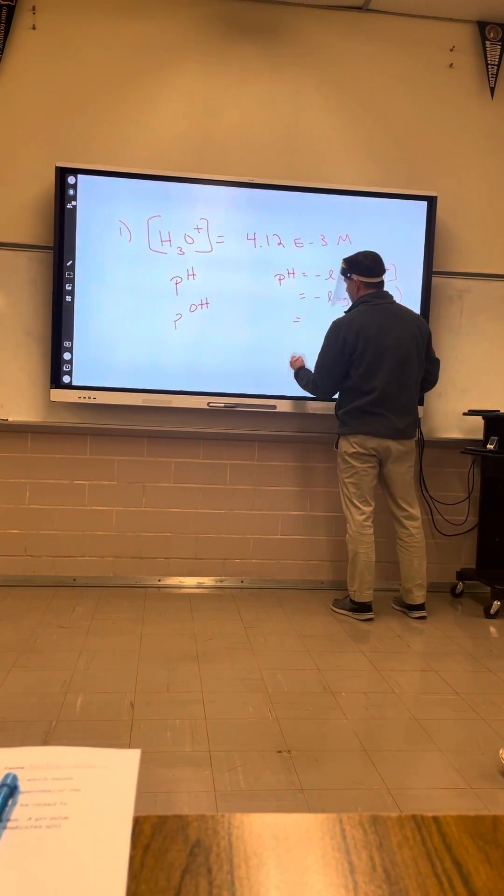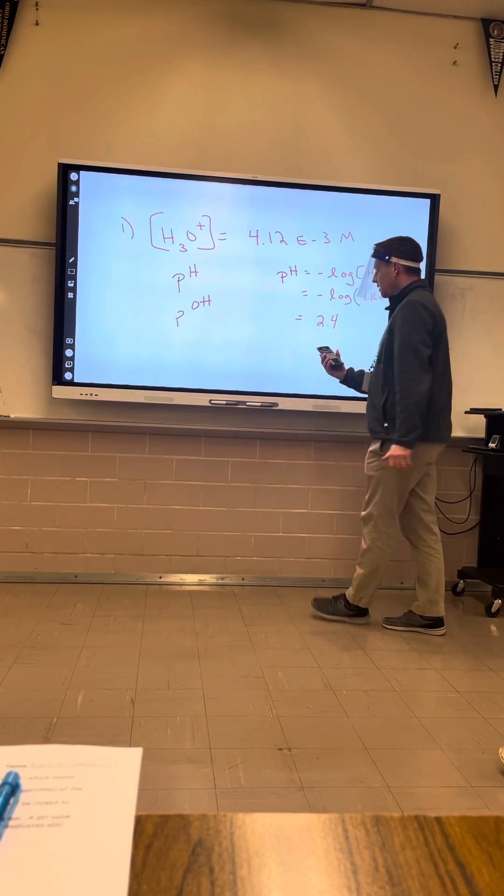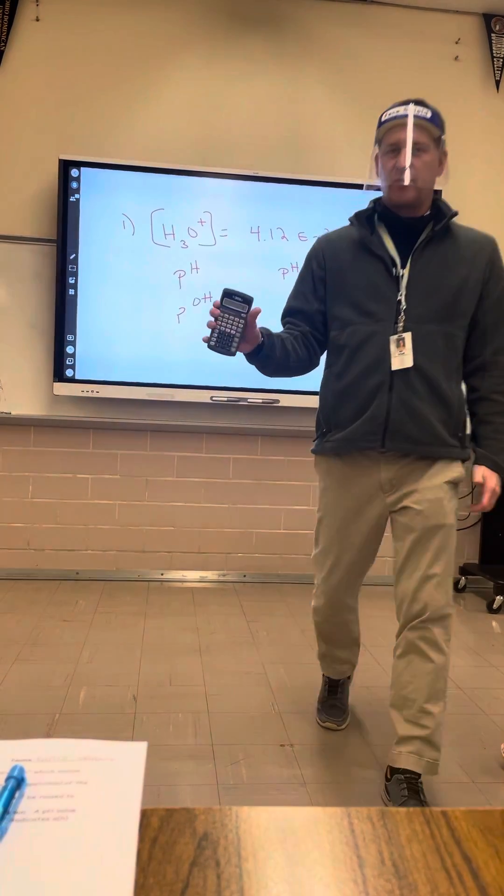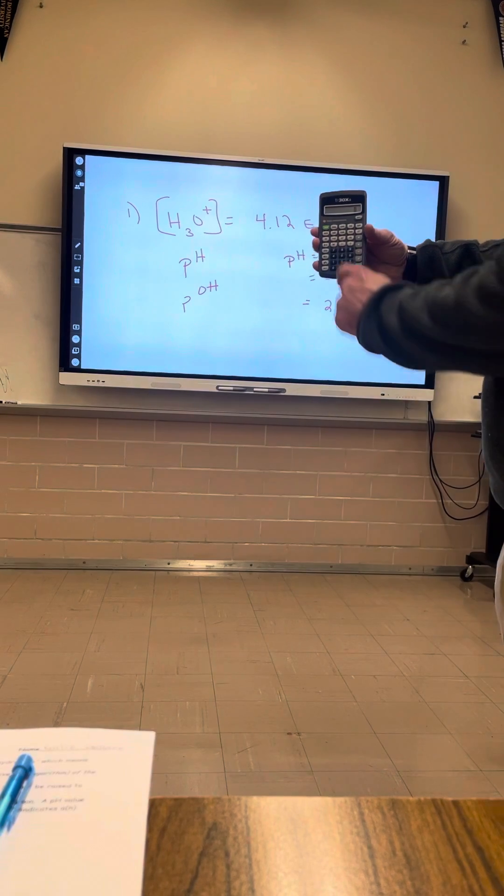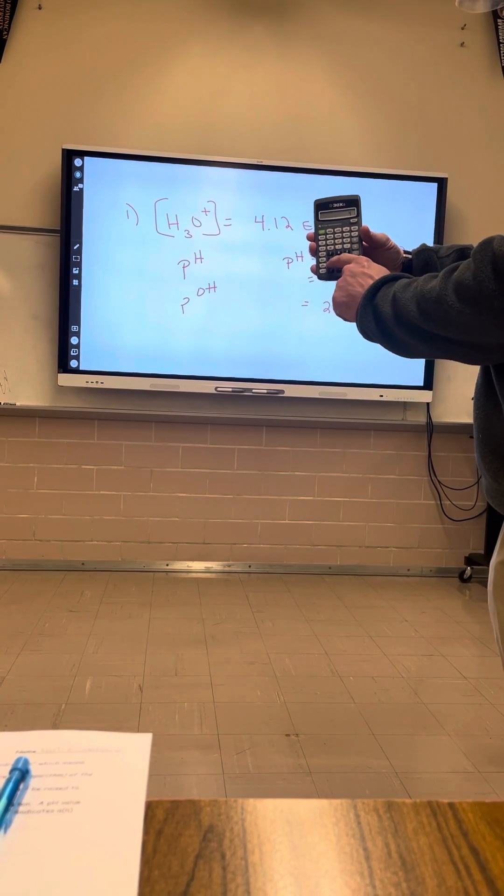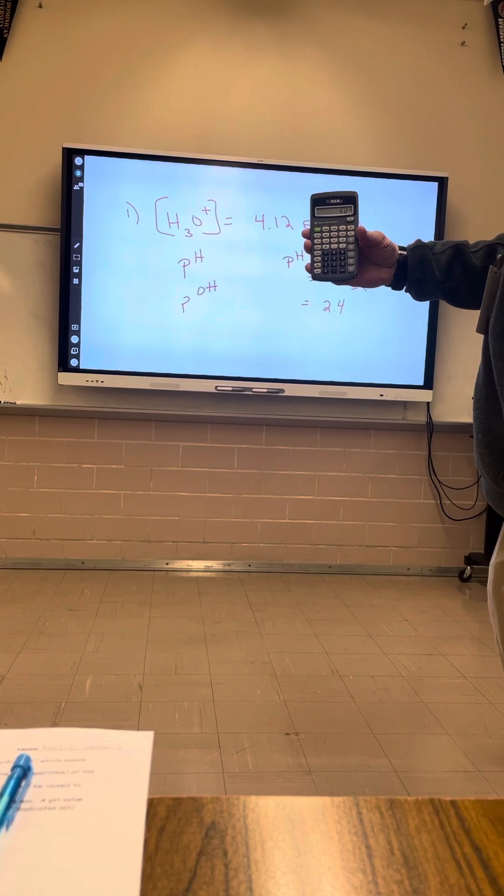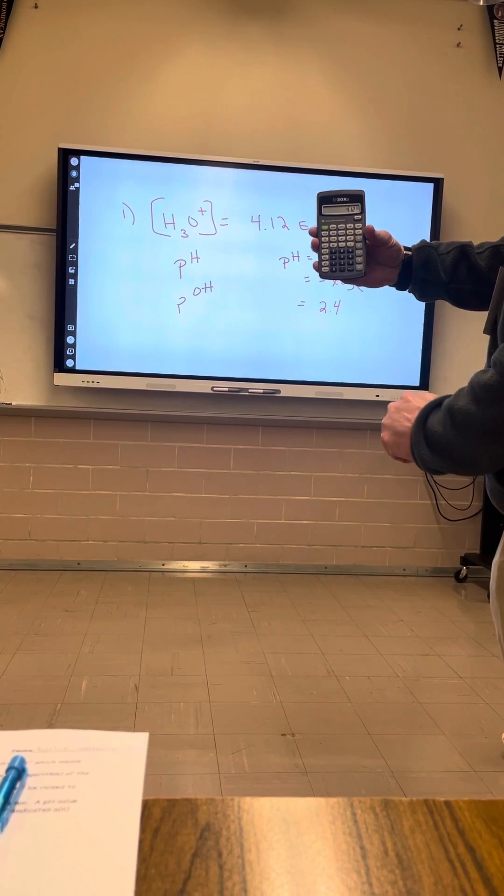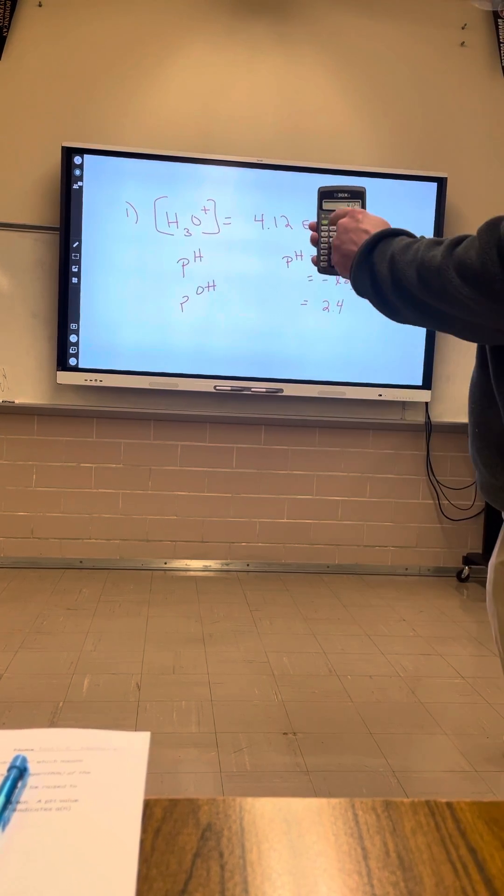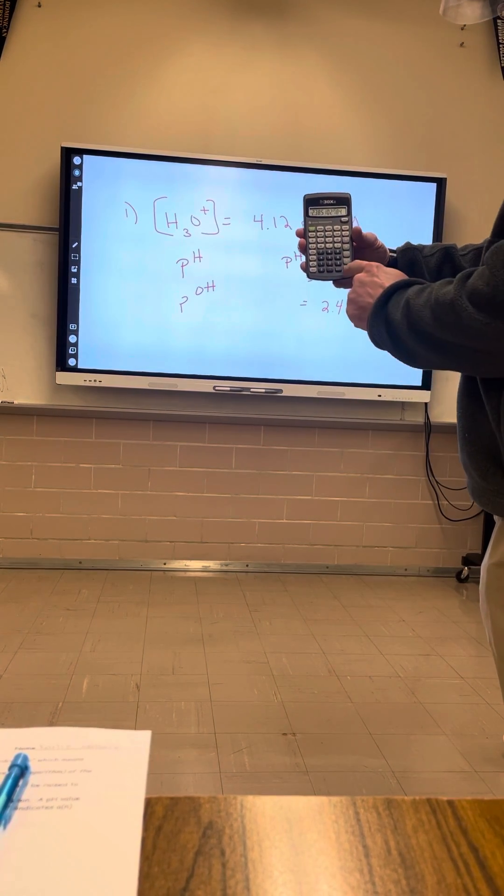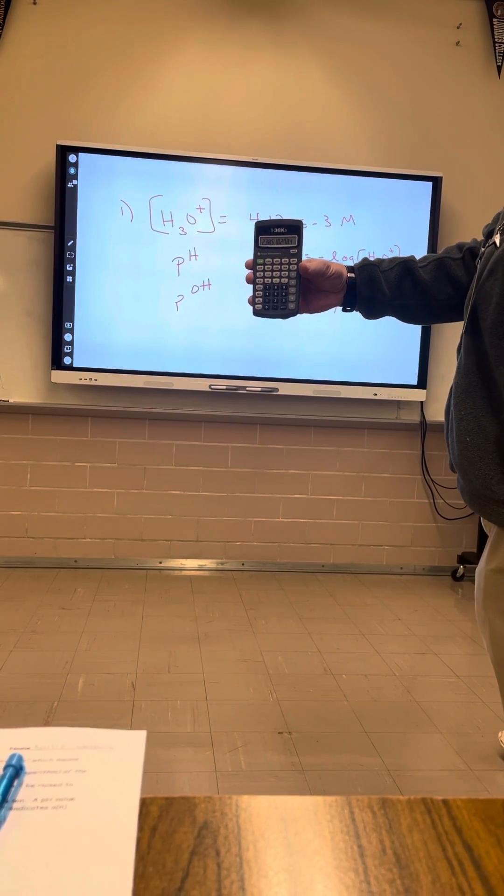I'm going to punch the exact same problem in a TI-30XA now. It punches in a little bit different. So to punch on a TI-30XA, you'll need to take the number down: 4.12 E 3 negative sign log negative sign again. Again, the same answer of 2.4.